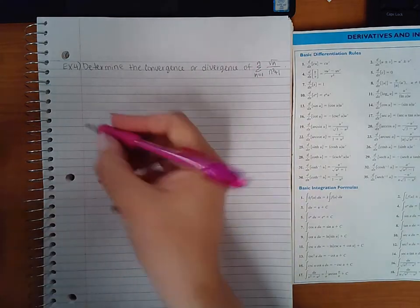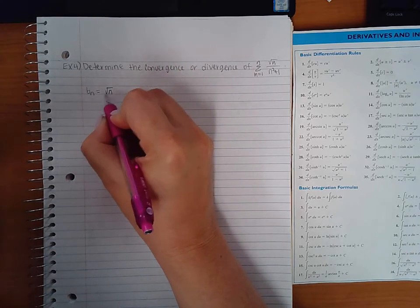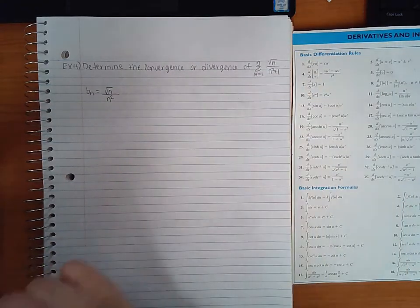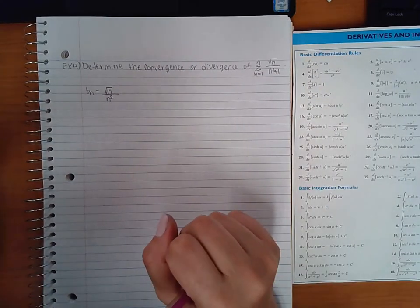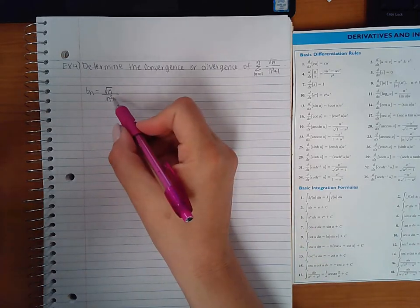So when I compare it, I'm going to compare it to the square root of n, keep the same power, and keep the same power in the denominator. I just don't want these constants in there because those are usually the parts that make it more complex. So I'm going to compare it to this.